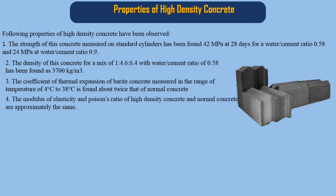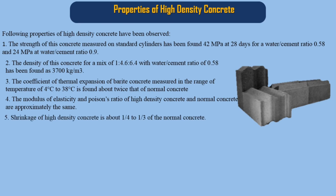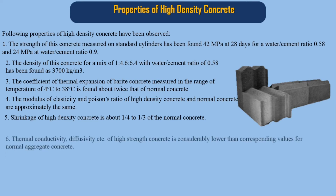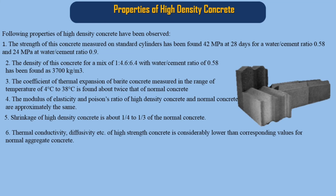4. The modulus of elasticity and Poisson's ratio of high density concrete and normal concrete are approximately the same. 5. Shrinkage of high density concrete is about 1/4 to 1/3 of normal concrete. 6. Thermal conductivity, diffusivity, etc. of high density concrete are considerably lower than the corresponding values for normal aggregate concrete.